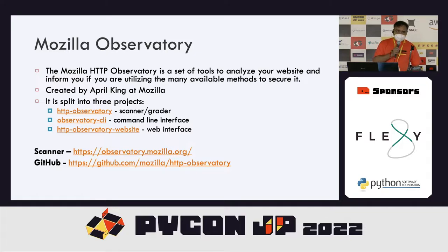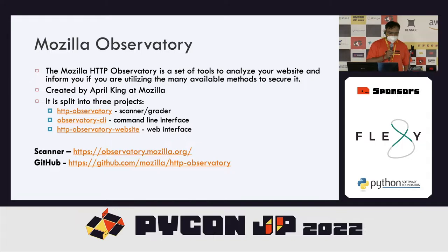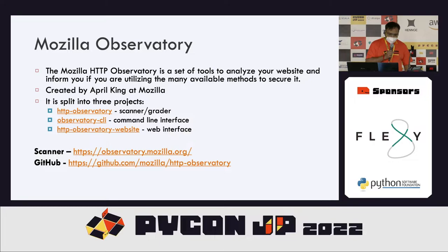There is a very useful tool called Mozilla Observatory, developed by Mozilla and available for everyone to use free of cost. It is a tool to analyze your website and inform you if you are utilizing available methods to secure it. It is split into three projects: HTTP Observatory, which is a scanner or grader; Observatory CLI, which is a command-line interface; and the Observatory website. You can access it at observatory.mozilla.org.